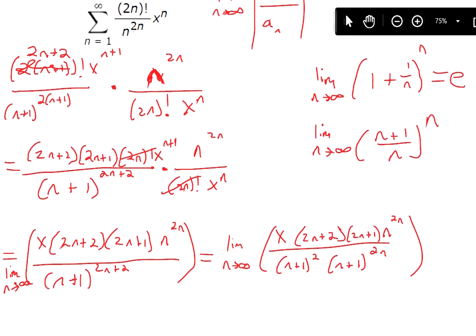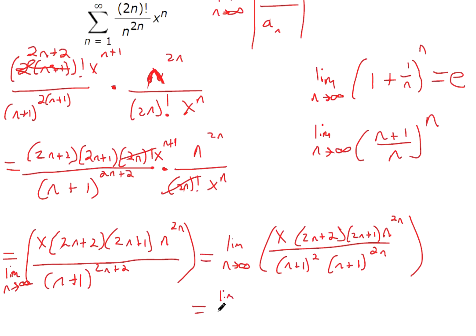The reason why I did that is because now we can start trying to evaluate this crazy limit. This is the limit as n goes to infinity of x times... If you were to expand all this, that would be 4n plus 2n plus 4n, that makes it plus 6n. This is 4n² + 6n + 2. And if you were to expand this down bottom, that would be n² + 2n + 1. We'll need to look at that in just a second.